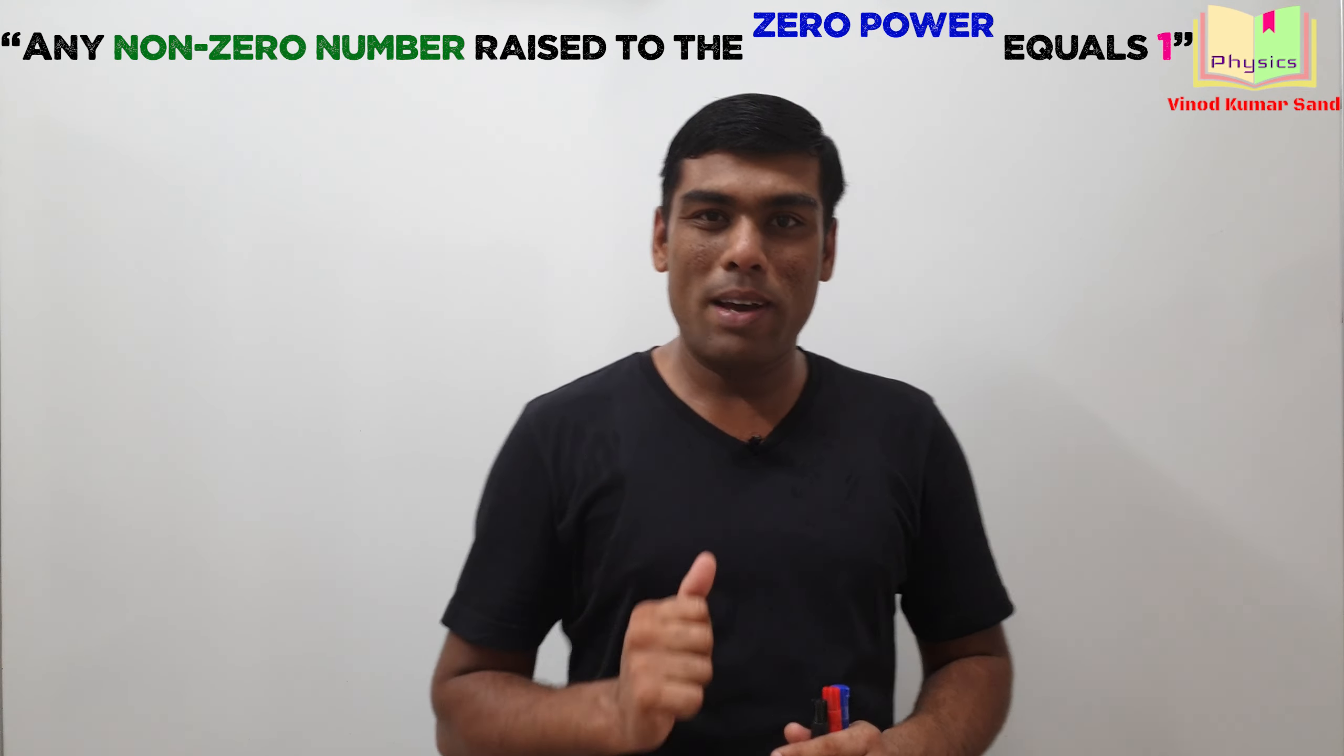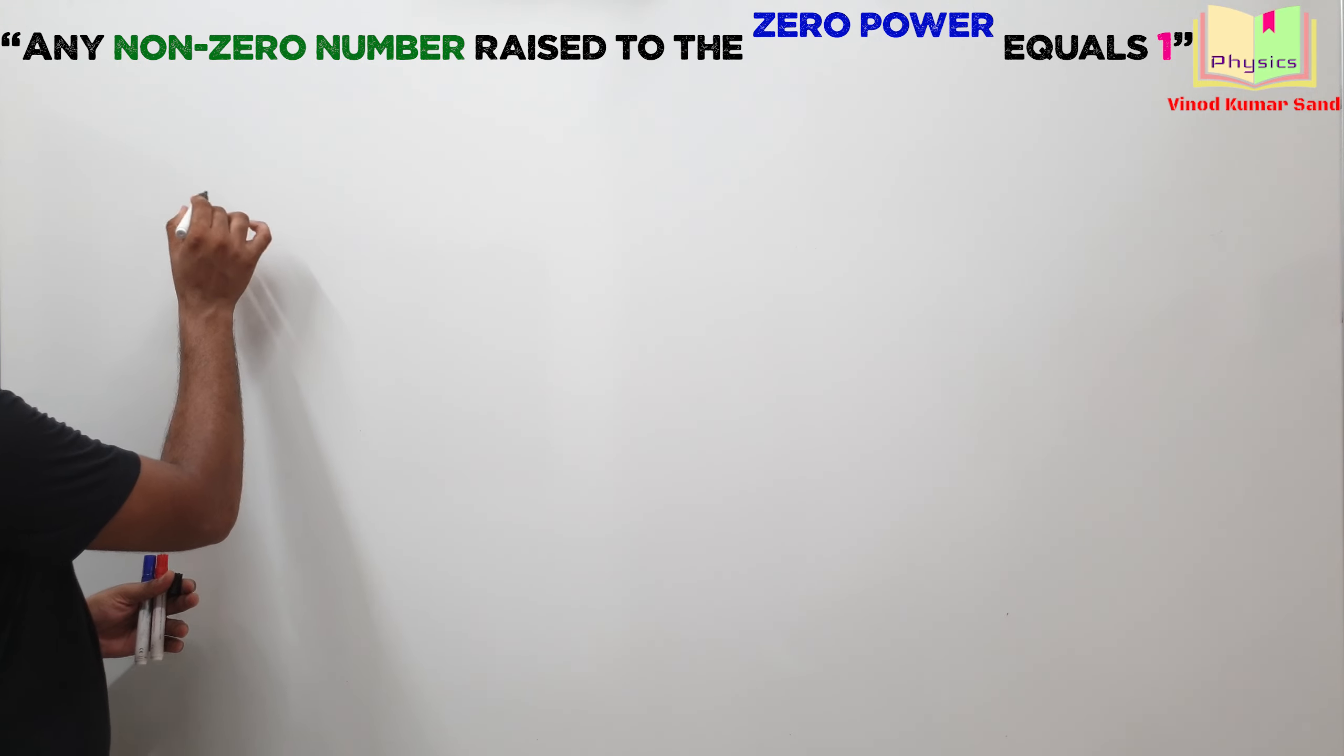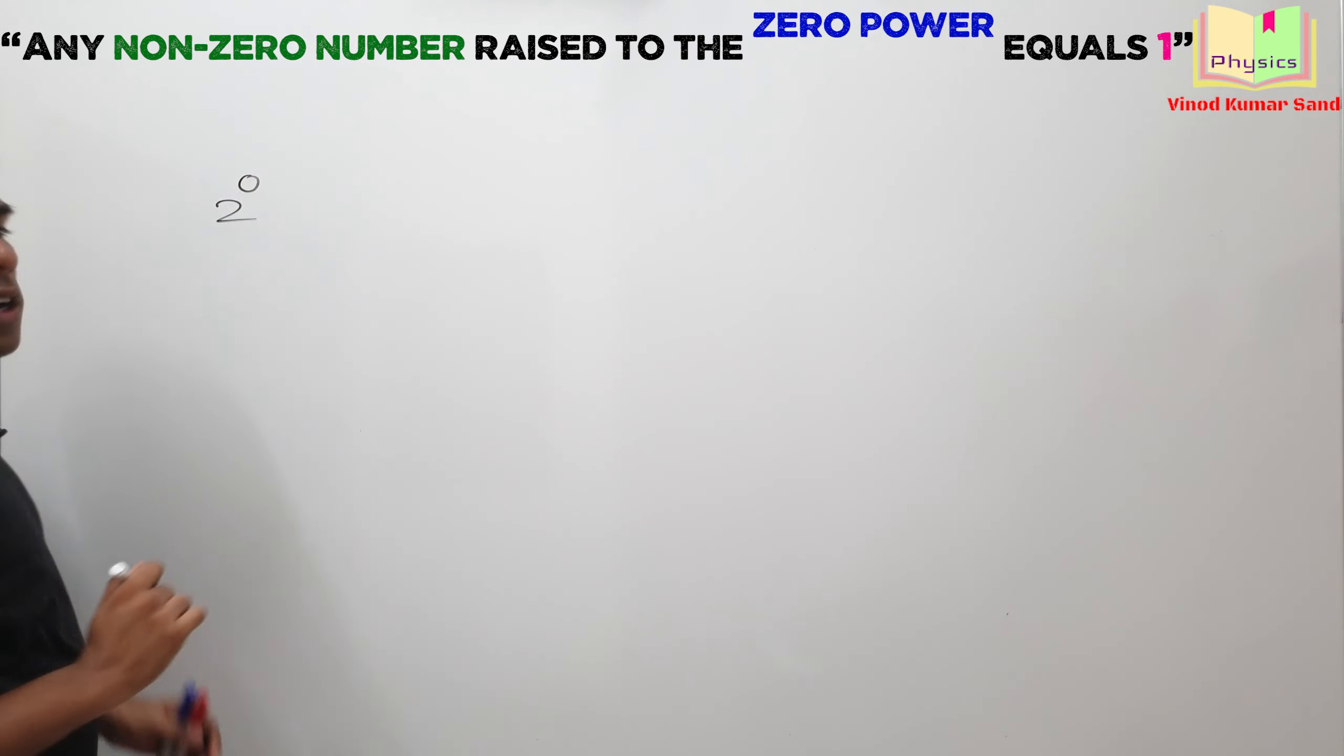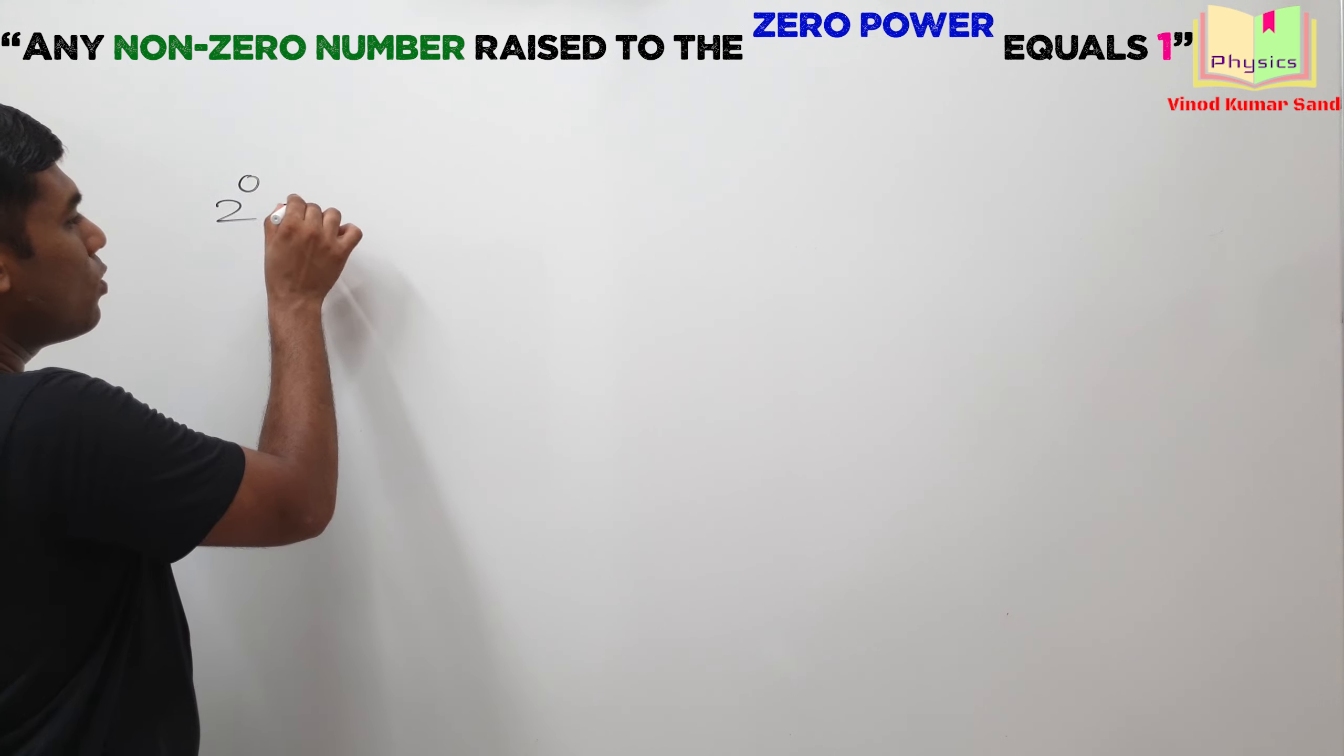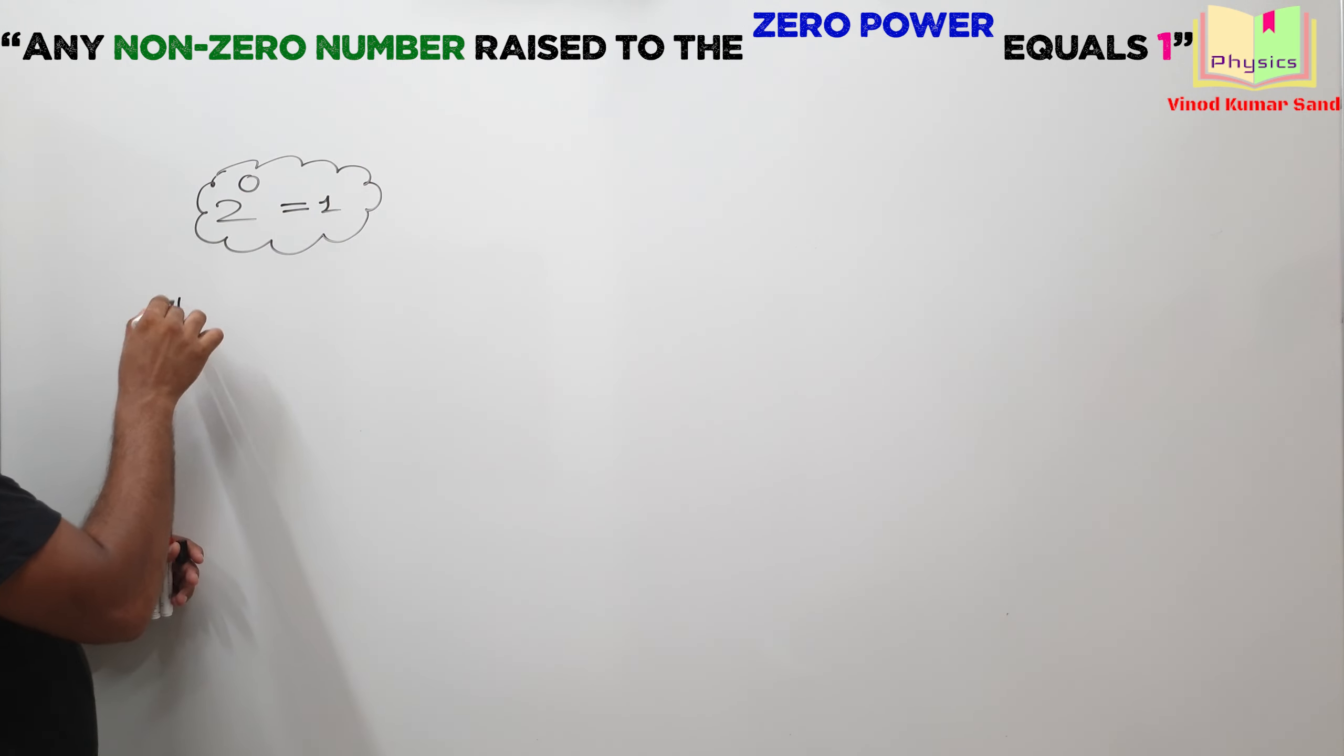In physics, we many times encounter such situations. For example, suppose somewhere we find 2 to power 0, its answer will be actually 1. The proof is pretty simple.